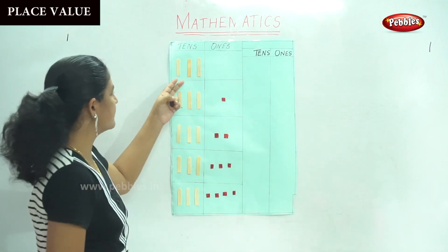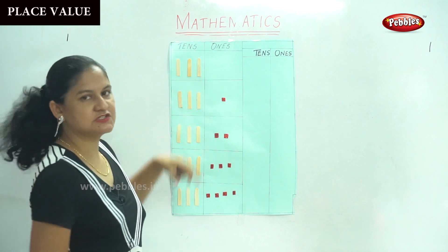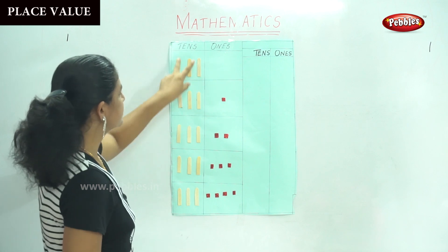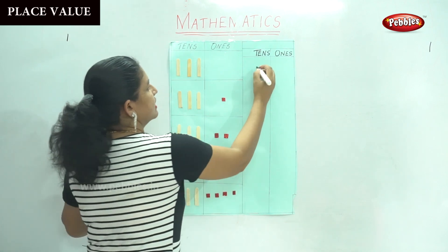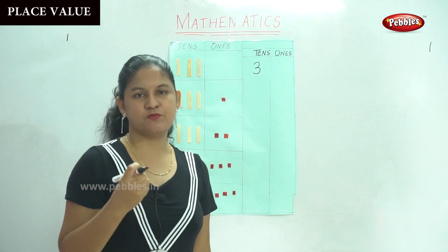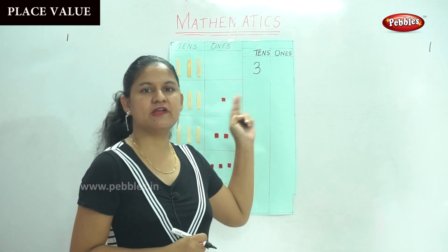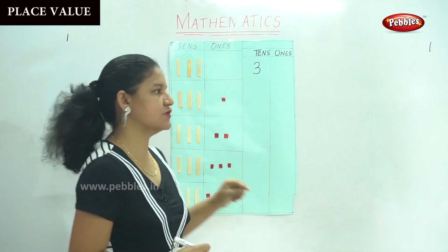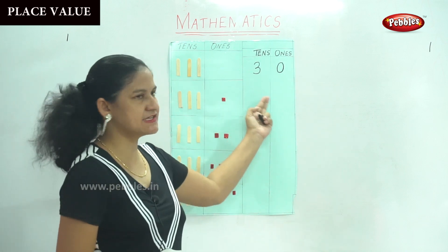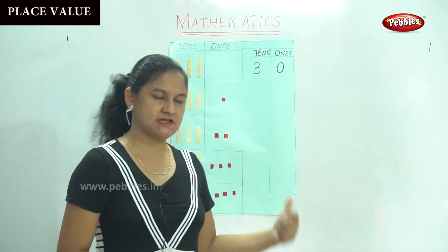So the first number we have: in the tens house we have one, two, three — so we are grouping it in tens: ten, twenty, thirty. So in the tens place we have three, and in the ones place, as I have already told, zero means absence of something, so it is blank. So we consider it as zero, and in the ones house we write it as zero. So we have three tens and zero ones, which is nothing but the number thirty.